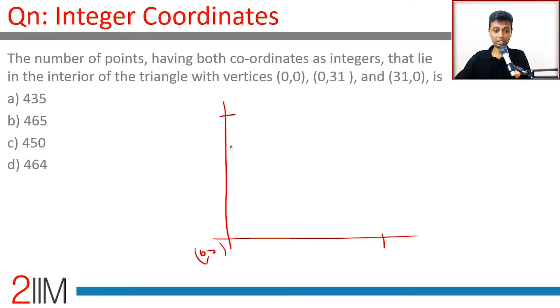(0,0) would be here. This would be (31,0), and this could be (0,31).